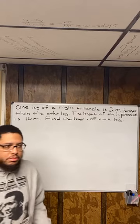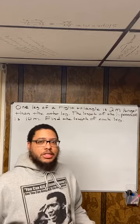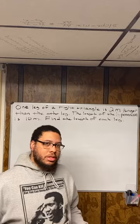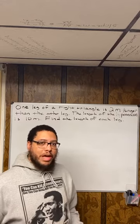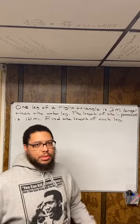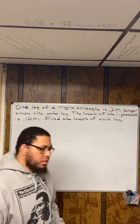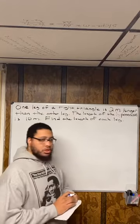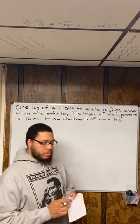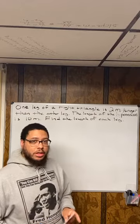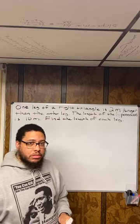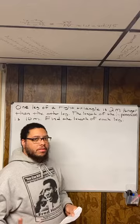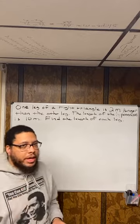People like pictures and pictures are helpful. That's why social media sites like Instagram are so popular — because people like pictures. So when you're doing math problems, if you can draw a picture, it's cool. So what we're going to do is draw a right triangle. Now, what makes a right triangle a right triangle? We should also remember that. What makes a right triangle a right triangle is that it has one 90-degree angle.